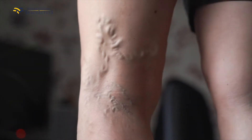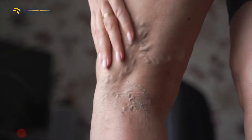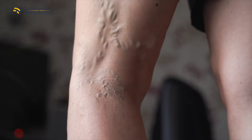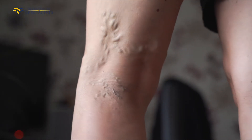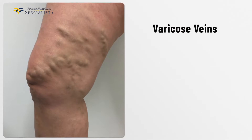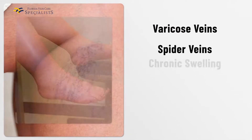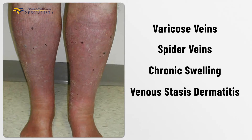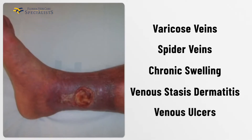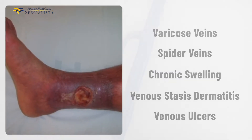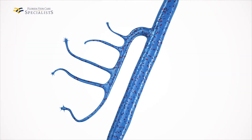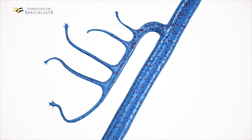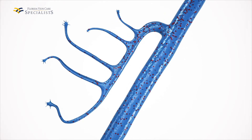Venous reflux occurs when blood in the superficial veins goes in the wrong direction. This is the most common cause of varicose veins, spider veins, chronic swelling, venous stasis dermatitis, and even venous ulcers. In order to understand how venous reflux occurs, we must first understand how normal veins function.